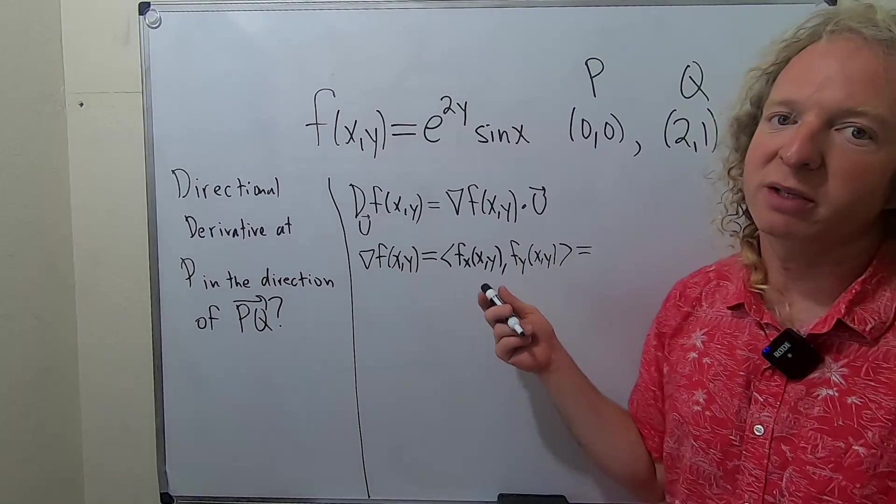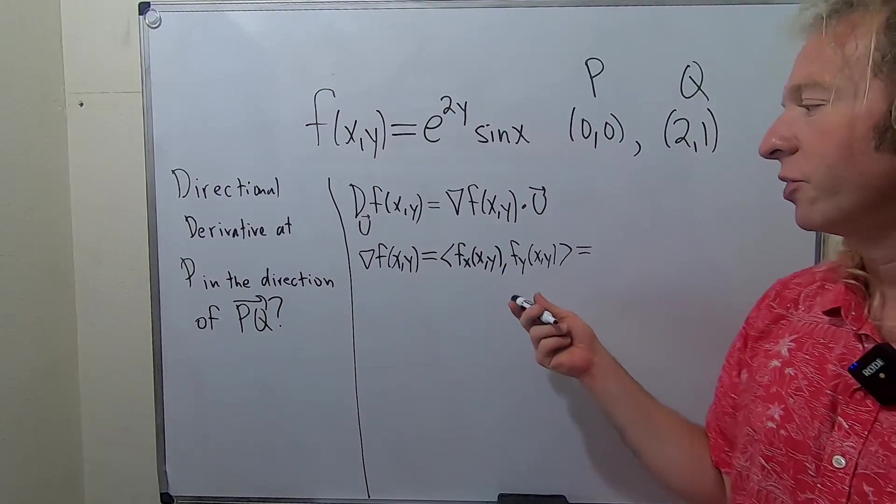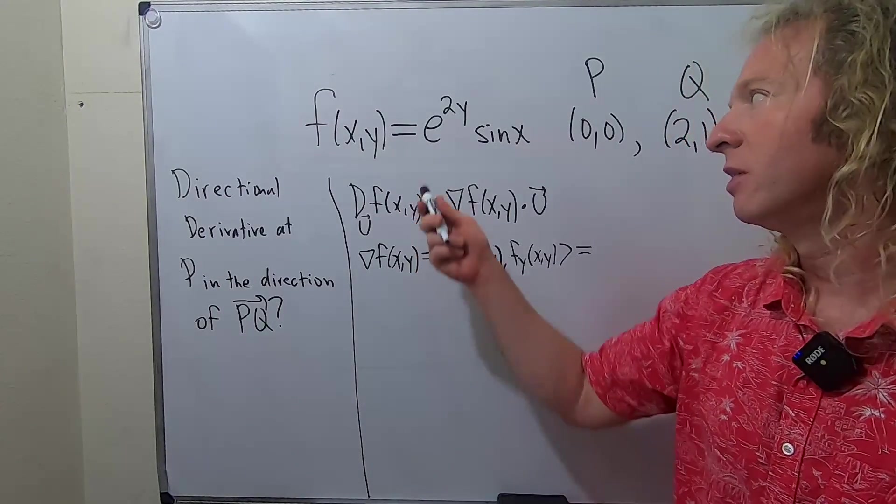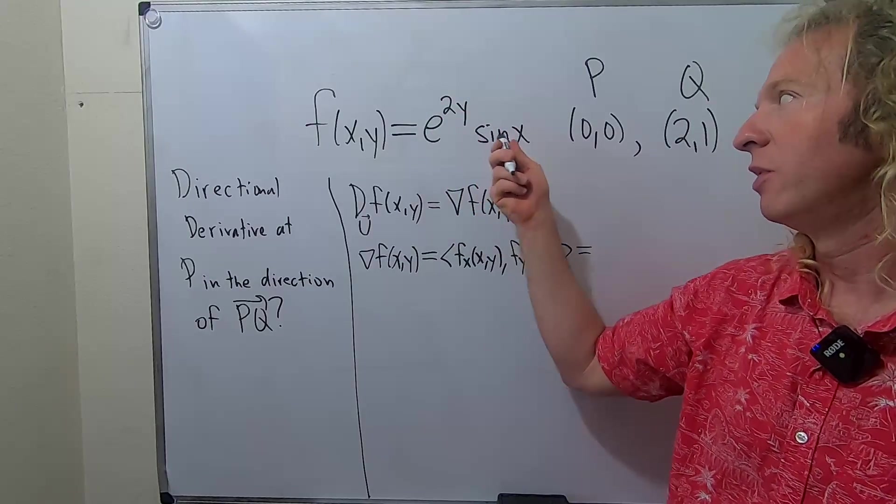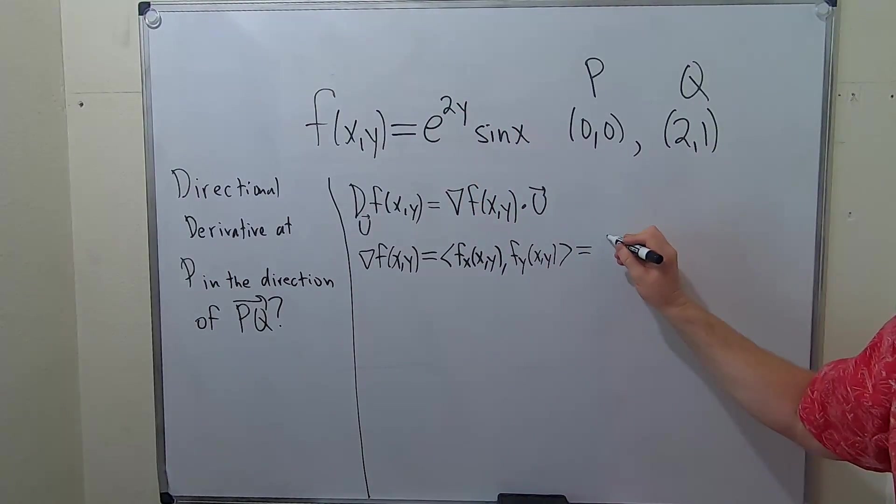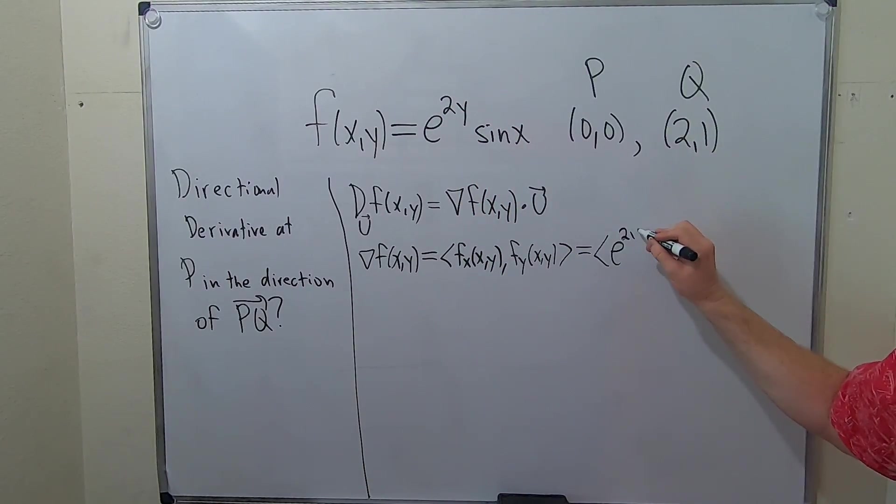The partial with respect to x, well, when you compute this, you treat all of the y's as constants. So, this is a constant, so it hangs out. The derivative of sine is cosine. So, we simply get e to the 2y cosine x.